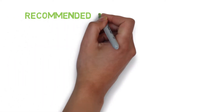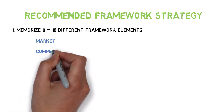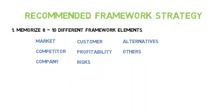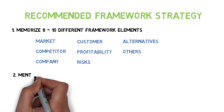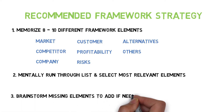To solve this, I recommend memorizing a list of eight to ten potential framework elements — broad but mutually exclusive elements such as market attractiveness, competitive landscape, company capabilities, customer needs, profitability, risks, and strategic alternatives. When given a case, mentally run through this list and pick the three to four elements most relevant to the case. If you still need more elements, brainstorm your own to add. With this strategy, you guarantee your framework is relevant and demonstrate to the interviewer that you can think critically and create unique, tailored frameworks for every situation.